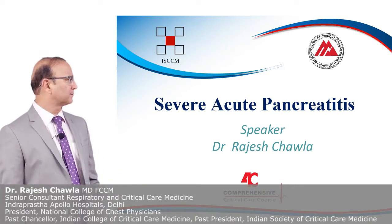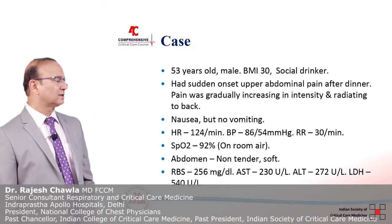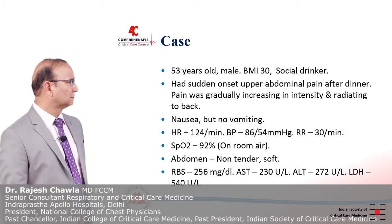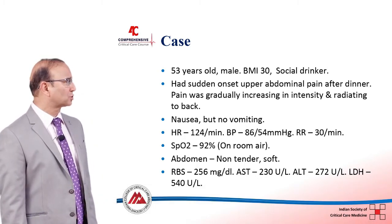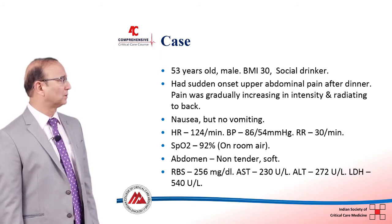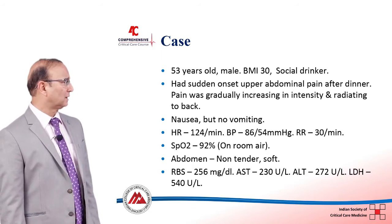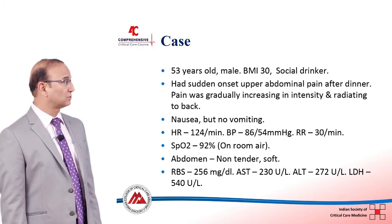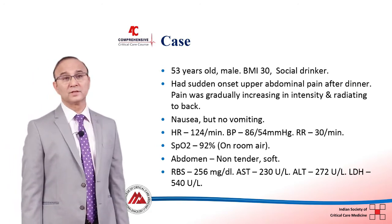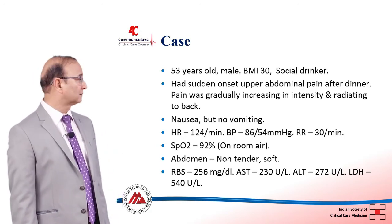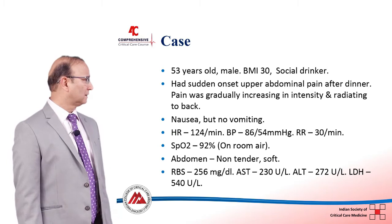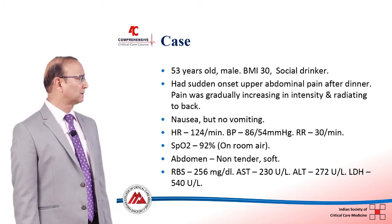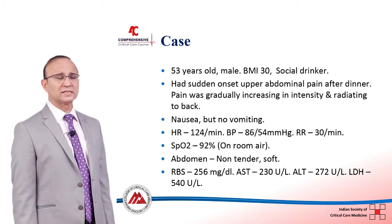Let's start with a case. This is a 53-year-old male whose BMI is more than 30, a social drinker, who had sudden onset upper abdominal pain after dinner that was gradually increasing in intensity and radiating to the back. He had nausea but there was no vomiting. Heart rate was 124 per minute, blood pressure 86/54 mmHg.